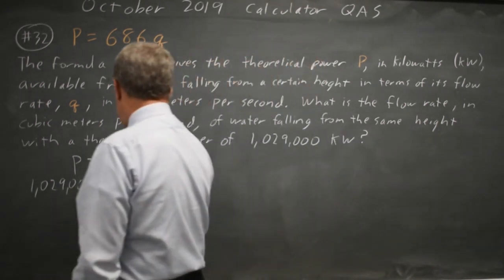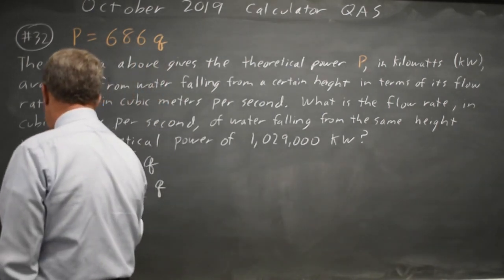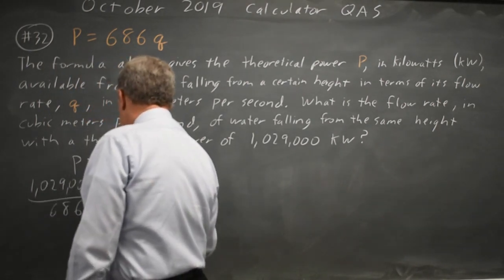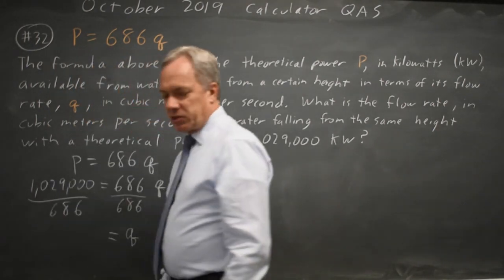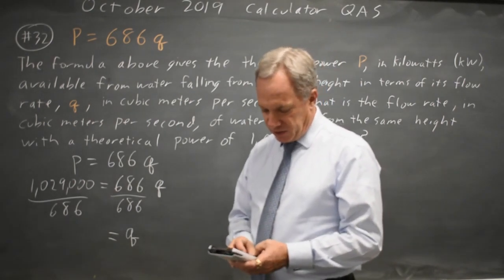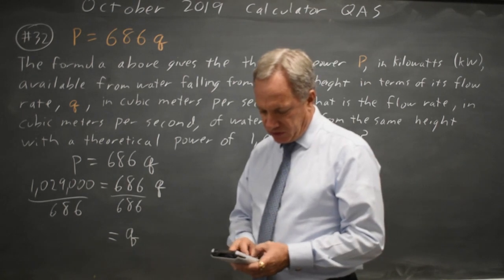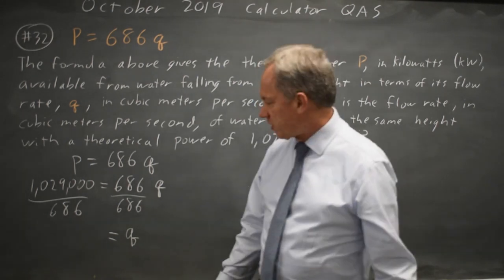To get q by itself we divide both sides by 686. So q is 1,029,000 over 686, which on my calculator is 1,500.